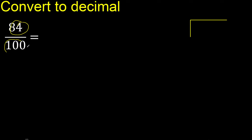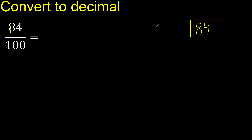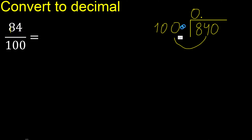84 divided by 100. 84 is less than 100, therefore complete — always complete with 0. Write 0 point, only once, as 84 is not less than... 100 multiplied by...